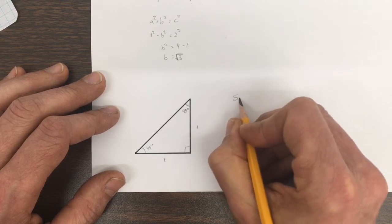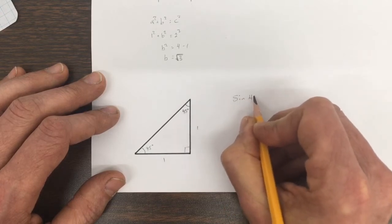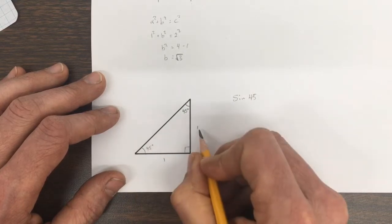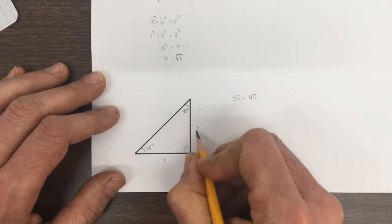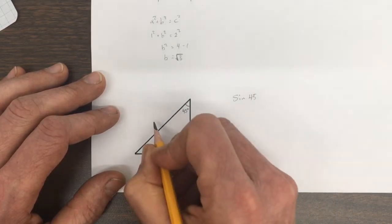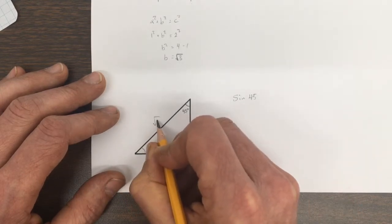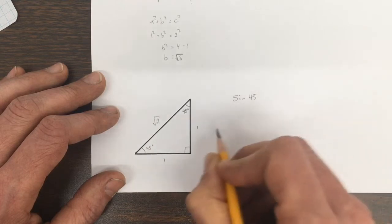So we have the sine of 45. How long is this side? Well, a squared plus b squared equals c squared, so we've got to have this side is going to be root 2.